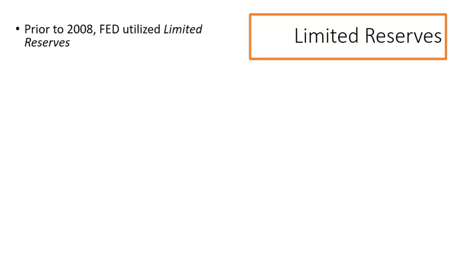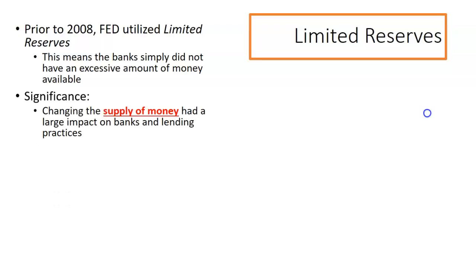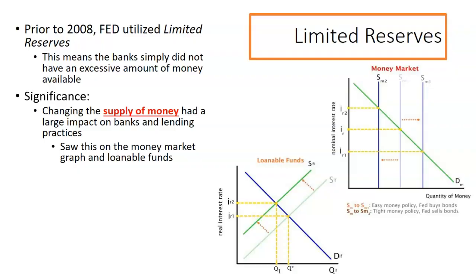So first off, what are limited reserves? A little history — prior to 2008, the Federal Reserve utilized limited reserves. This meant that the banks simply did not have an excessive amount of money available. What is the significance? Changing the supply of money had a large impact on banks, and we saw this in things like the money market graph. Changing the supply of money from SM to SM2 would change the interest rates, either increase or decrease.